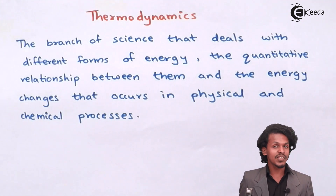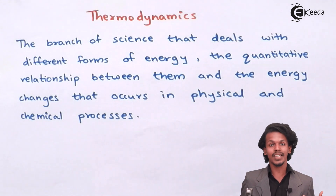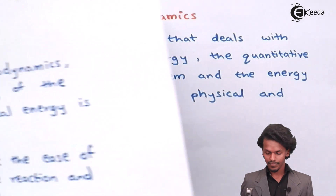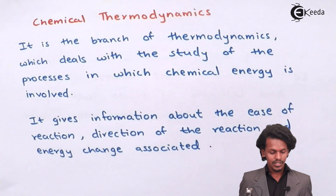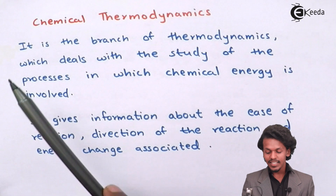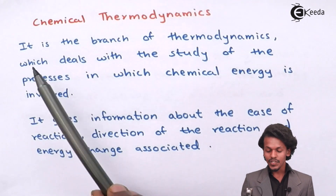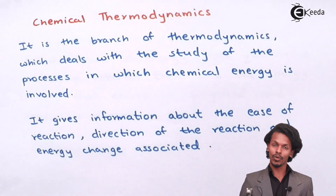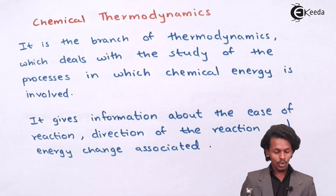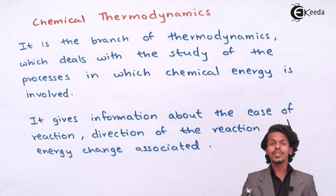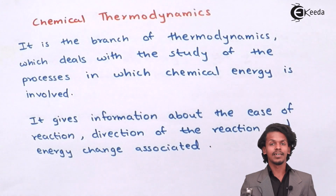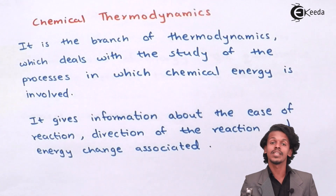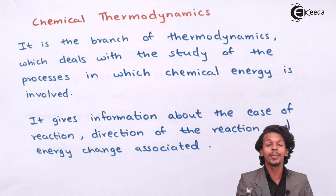Now talking about this chapter, it is related to chemical thermodynamics. Chemical thermodynamics means it is the branch of thermodynamics which deals with the study of processes in which chemical energy is being involved. In a chemical process, the chemical can produce heat or the chemical may intake heat so that the reaction should occur to form a product.